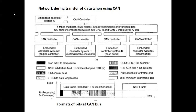A car has transmission control, engine control, anti-lock braking control, and many other controllers. Wherever there is a device that needs to be controlled, a Controller Area Network controller is placed. Using that CAN controller, the entire car or vehicle is controlled.